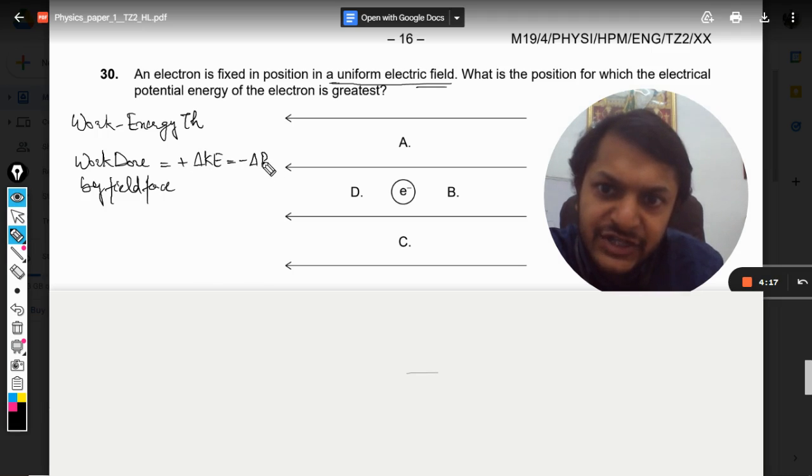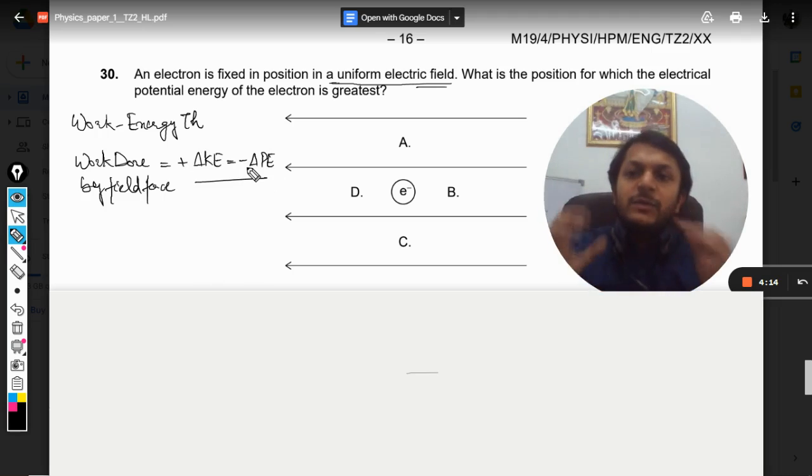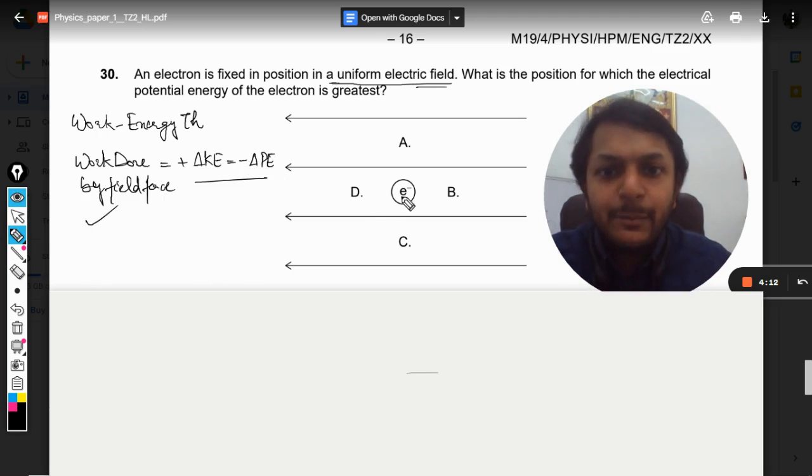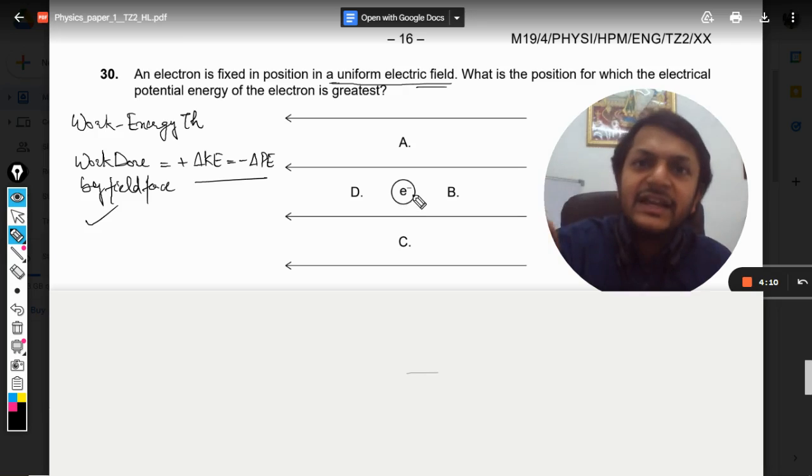Work energy theorem says that the work done by field force is equal to the positive change in kinetic energy and negative change in potential energy. What does this mean? This means that if a particle is placed inside a field—electric field, magnetic field, gravitational field—if it is placed in a field and it is experiencing a force.